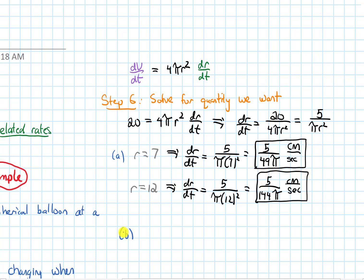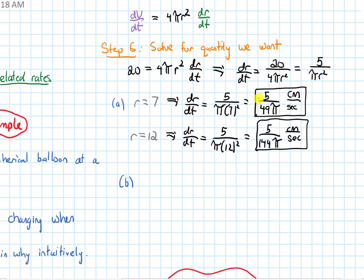Part B asks, which one of these is larger? If we compare these two fractions, they have the exact same numerator, but the 144π is the bigger denominator. If I have a bigger denominator, that's going to make that whole fraction smaller. So that means my derivative, my dr/dt, is larger. It was asking me where it was larger - this is going to be larger at t equals 7.